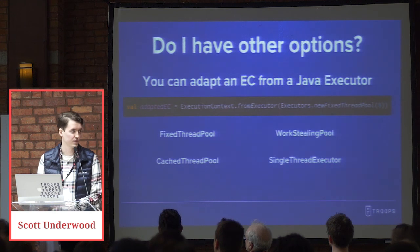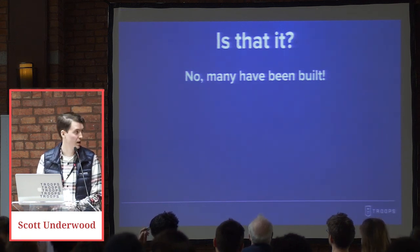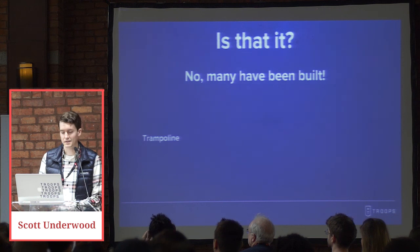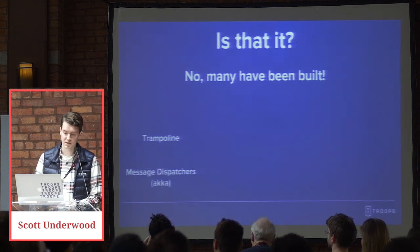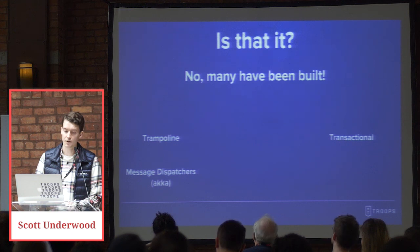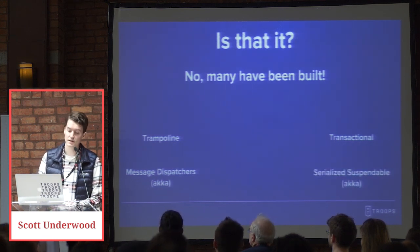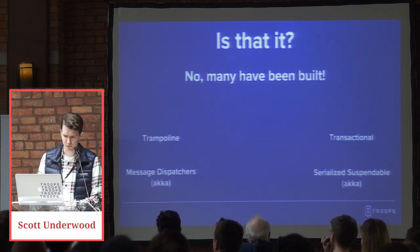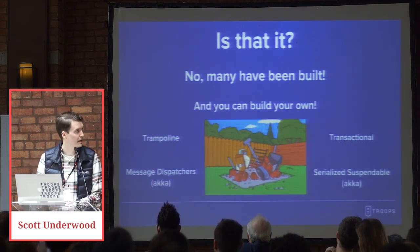Beyond Java executors, there are many other options with interesting properties. There is a trampoline execution context found in Play and Slick, used to avoid context-switching overhead. There are message dispatchers in Akka, which are execution contexts. There's the idea of a transactional execution context that wraps a database connection and provides rollbacks if your runnables fail. There's also a serialized suspendable execution context giving you hooks for suspending and resuming tasks. You can always build your own — this is just a trait.